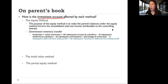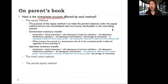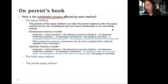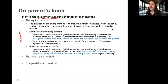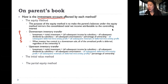Depending on whether it is an upstream or downstream Intra-Entity Transfer: a downstream Intra-Entity Inventory Transfer is where the parent transfers and sells inventory to its subsidiary, while an upstream Intra-Entity Inventory Transfer is where the subsidiary sells its inventory to the parent.